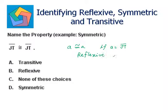When a is congruent to a and a belongs to the real numbers, B reflexive is the answer.